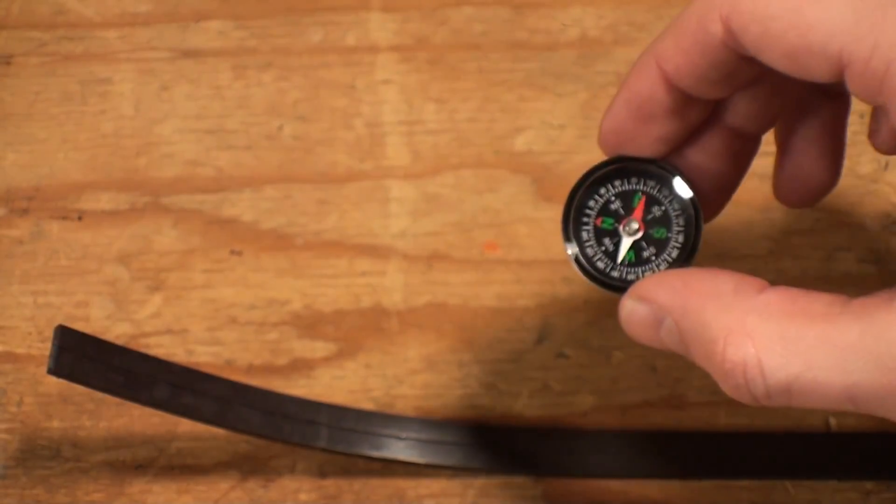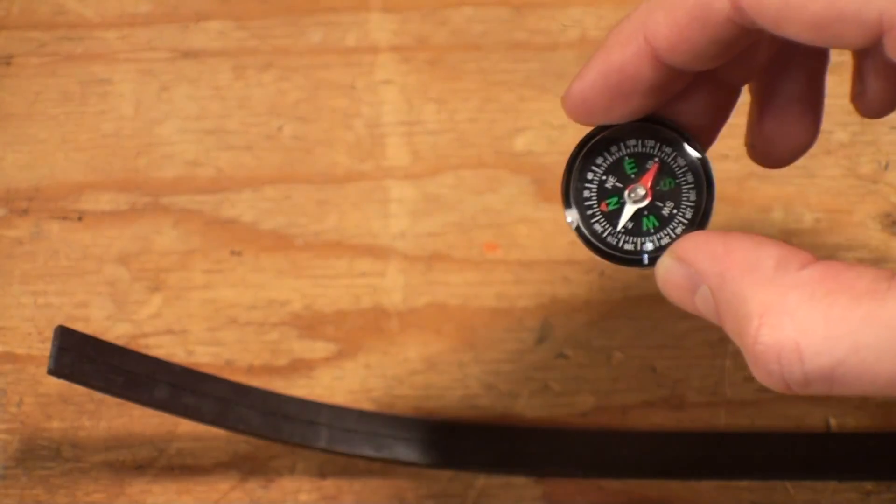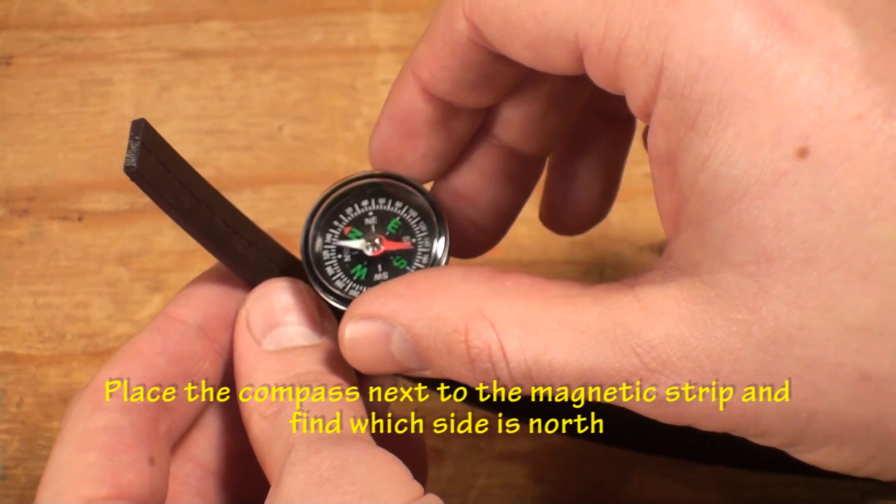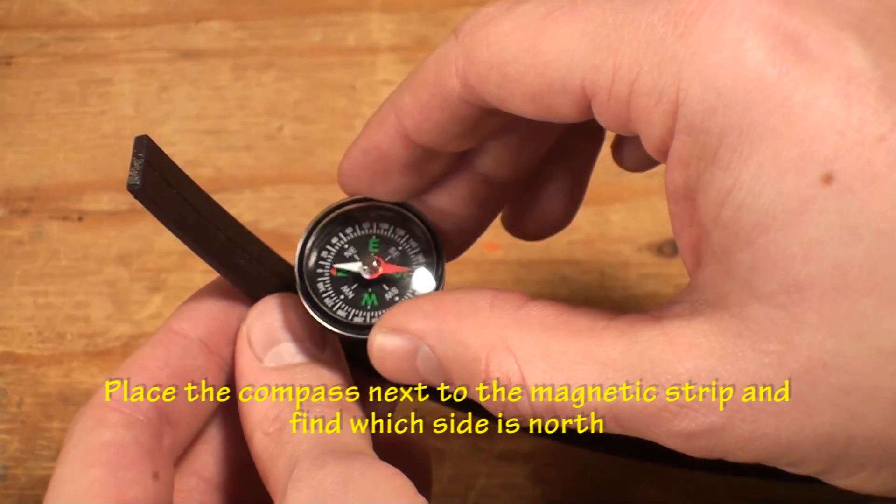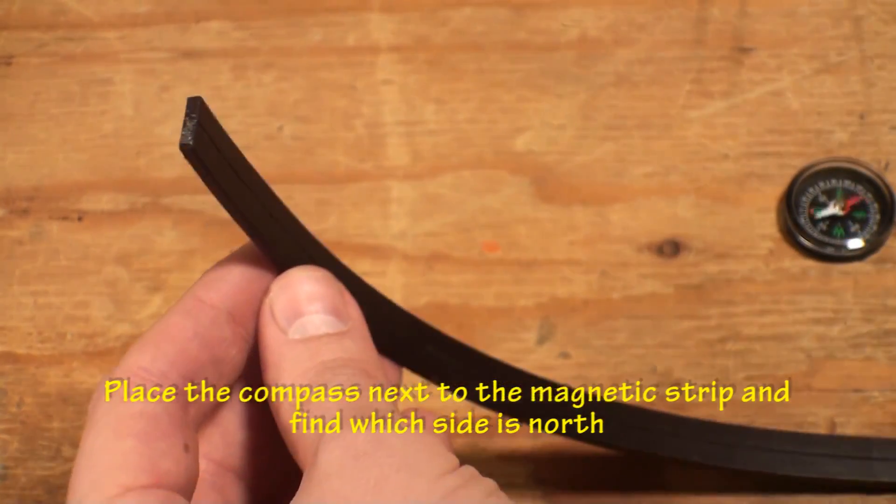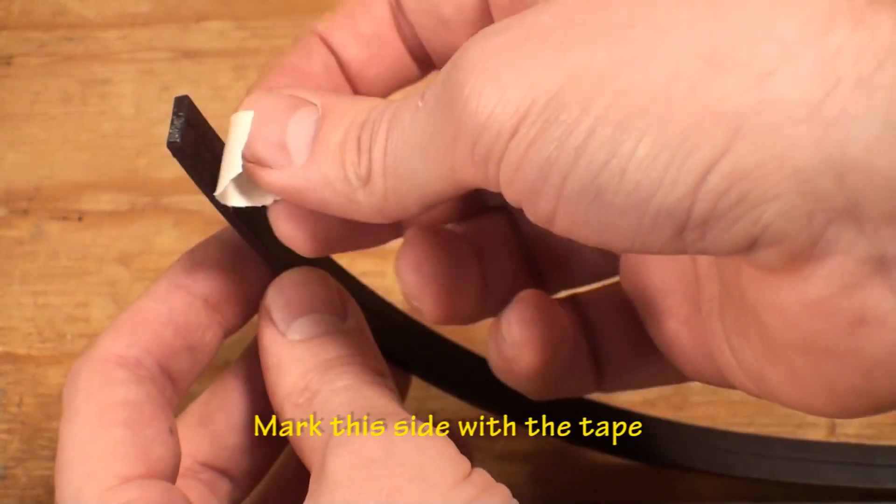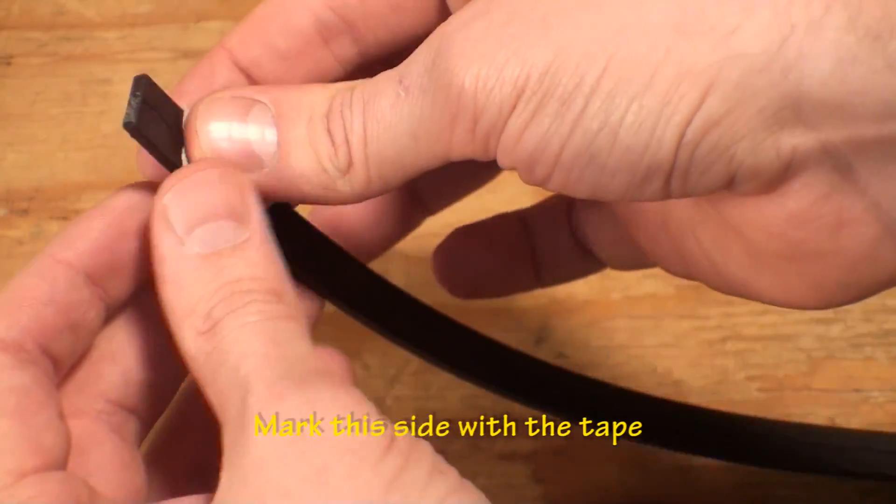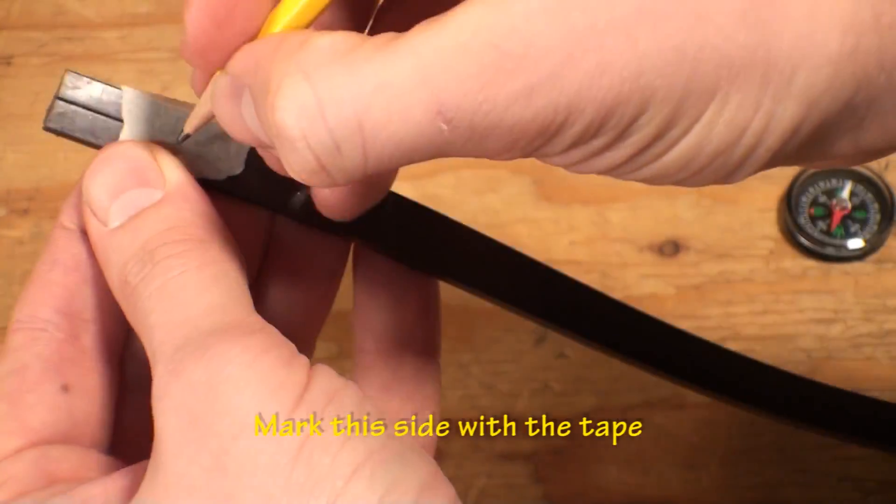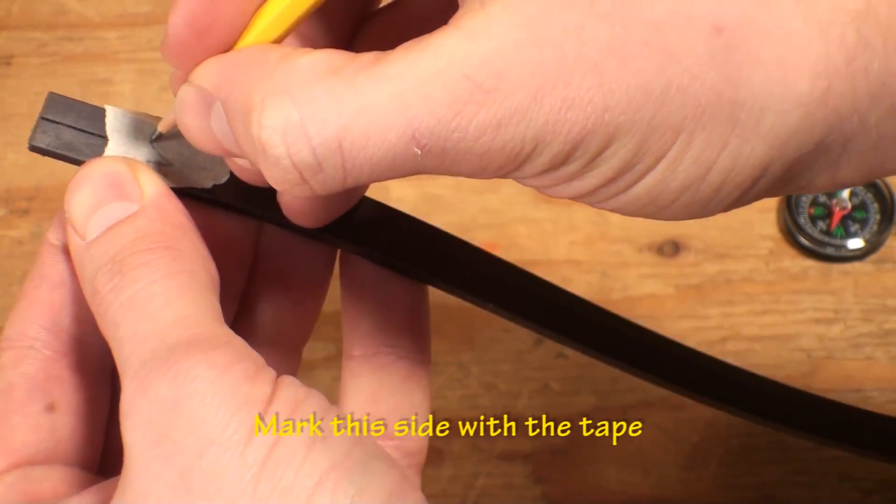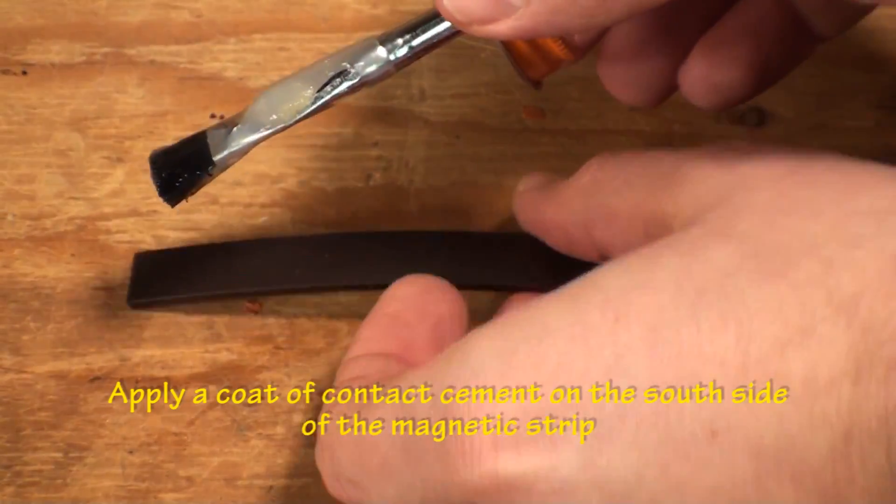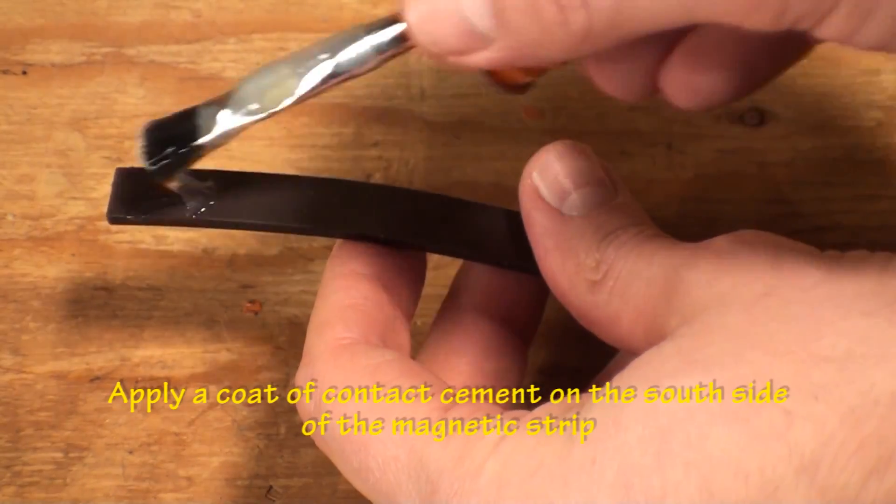Next, you will need both 23 and a half inch long high force magnetic strips and the compass. Place the compass next to the strip to determine which side is north. Mark this side as north with masking tape and repeat with the other magnetic strip. Apply contact cement to the south side of the magnetic strips